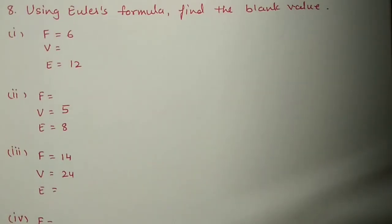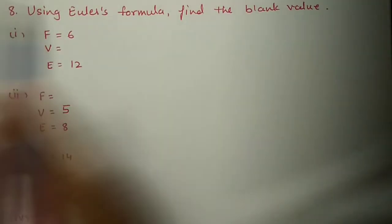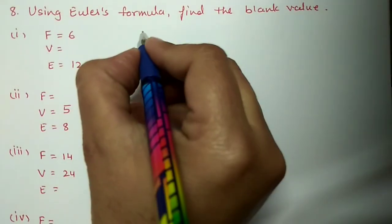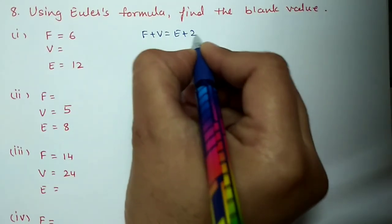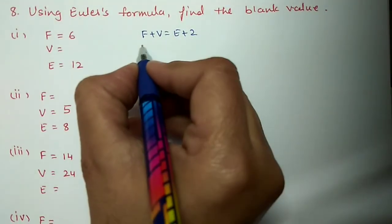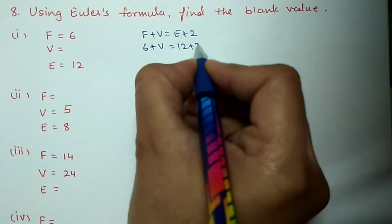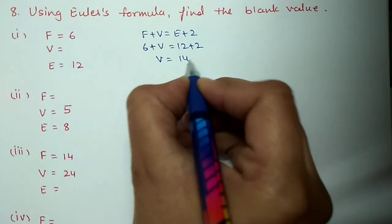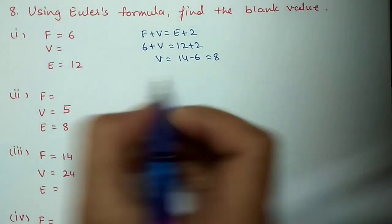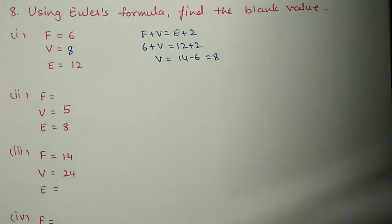Question number 8: Using Euler's formula, find the missing value. You have to use F plus V equals E plus 2. Here V we have to find: F is given as six, E is twelve. So V equals E plus 2 minus F equals 12 plus 2 minus 6 equals 8. Same way you can do the remaining questions.